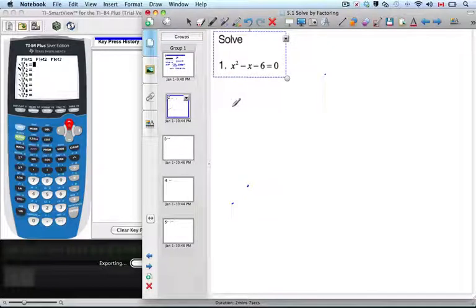All right, solving quadratic equations. One of the keys to solving quadratic equations is having one side of the equation equal to zero. That is a key factor. That's the first thing you should always think about.